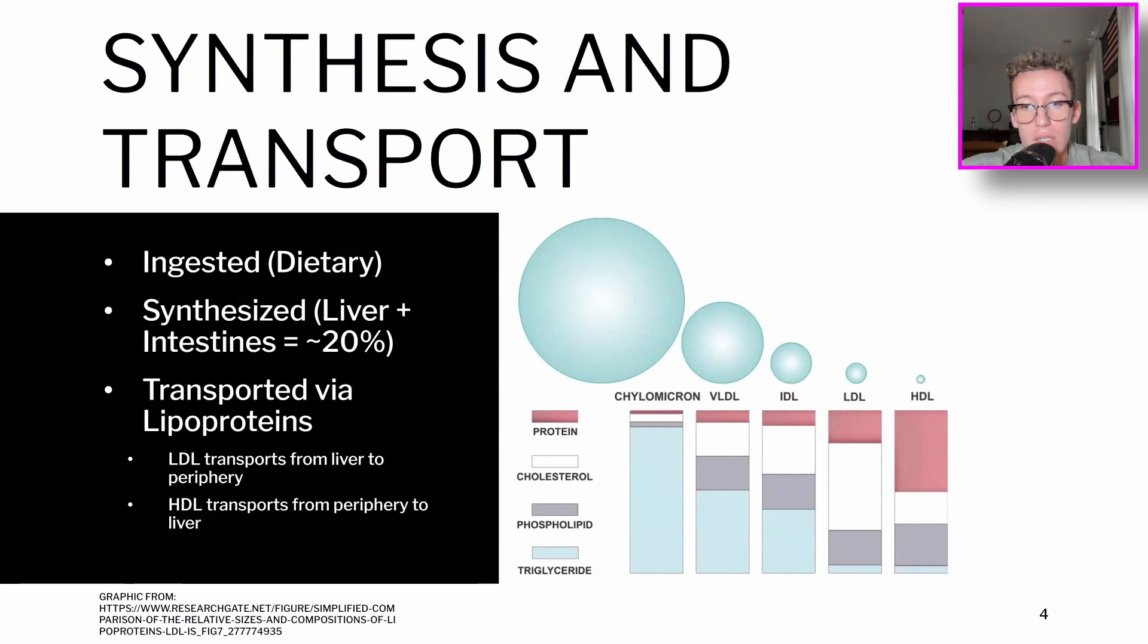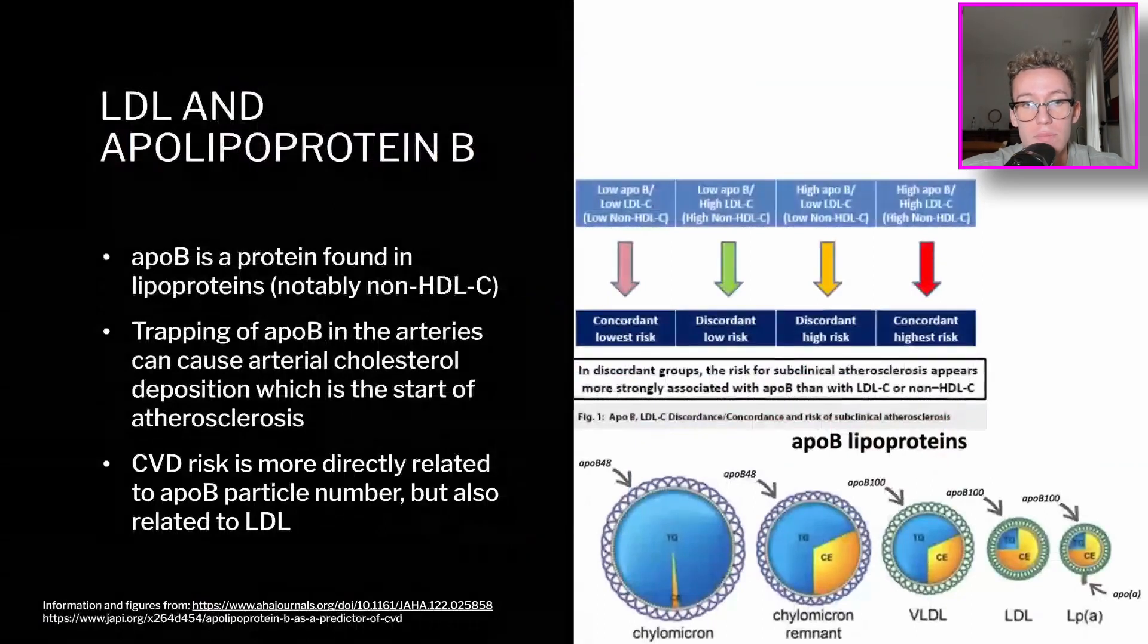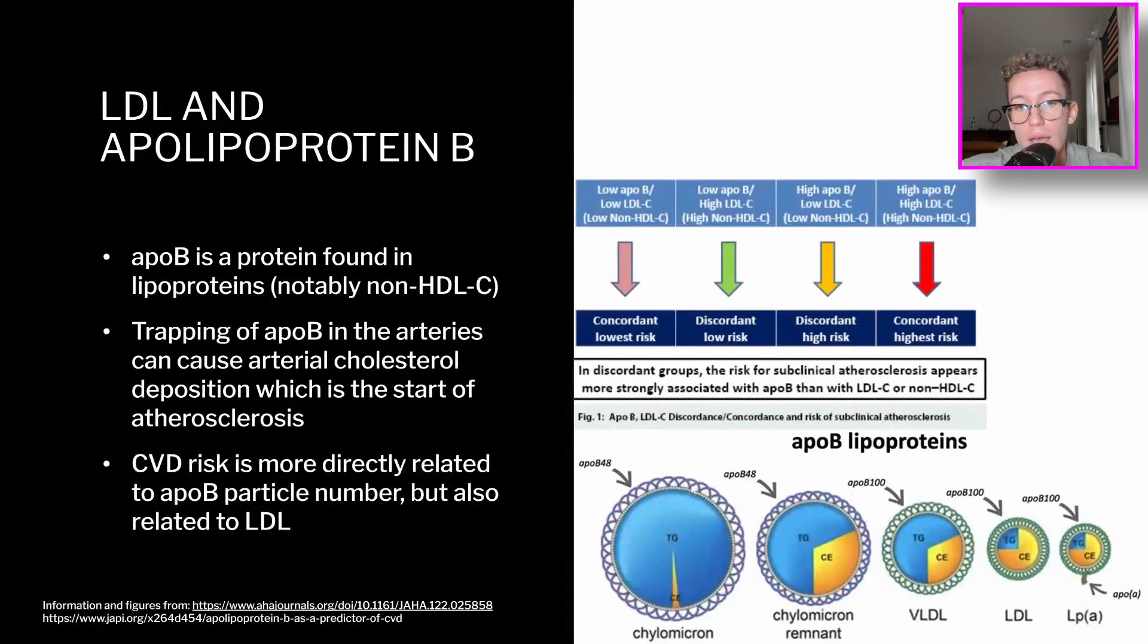Okay, so a little bit more on LDL and a particular type of lipoprotein called apolipoprotein B or in short, apoB protein. So if you take a look on the right here, you can see that there is an apoB protein on the exterior of all of these different lipoproteins. So that's basically what it is. It's a protein that sticks out on the exterior of the different lipoproteins. This protein can kind of cause the particles to get trapped in your arterial wall, which can allow the cholesterol or other fats to get deposited into the arterial wall, which is basically the start of atherosclerosis.